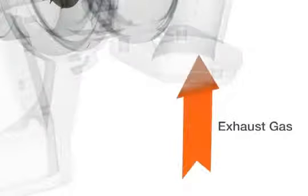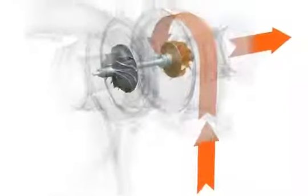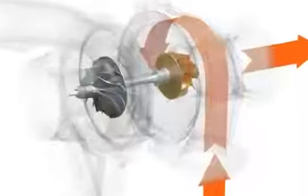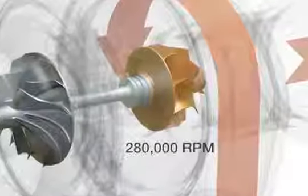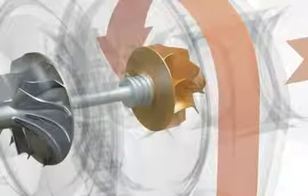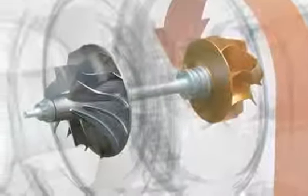A turbocharging system starts with an engine's exhaust gas, power that is essentially wasted in non-turbo engines. This exhaust gas is channeled to the turbo where it spins a turbine wheel. This highly engineered wheel spins quite fast, reaching speeds of up to 280,000 RPM.